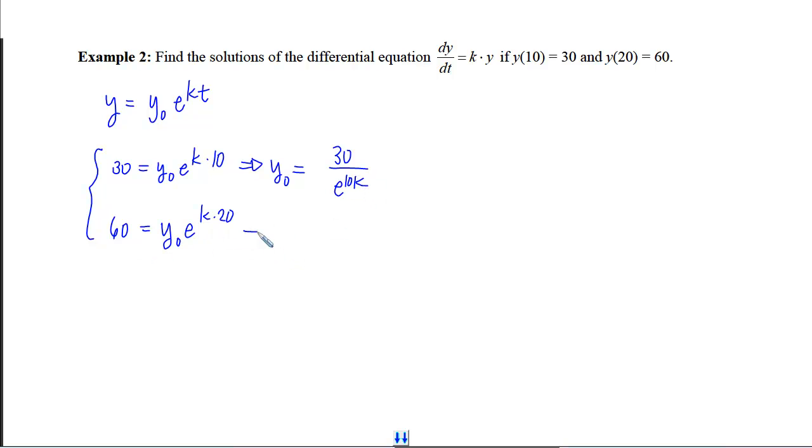If I now plug that in down here and do my substitution method, I will get 60 equals 30 over e to the 10k times e to the 20k. If I combine my exponentials and make a single exponential out of it, I'll get 60 equals 30 times e to the... Remember that when you have division of exponentials and the bases match, you will subtract their exponents. So that would be 20k minus 10k gives me 10k.